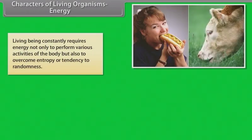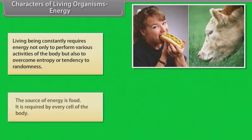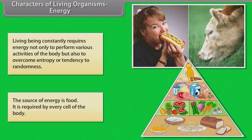Living beings constantly require energy not only to perform various activities of the body, but also to overcome entropy or tendency of randomness. The source of energy is food. It is required by every cell of the body.